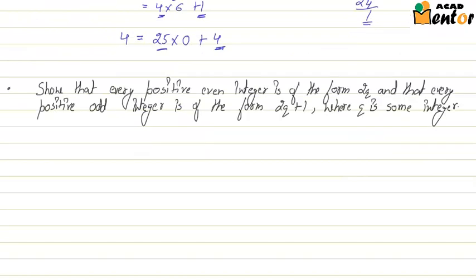So the problem is show that every positive even integer is of the form 2Q and every positive odd integer is of the form 2Q plus 1 where Q is any integer.